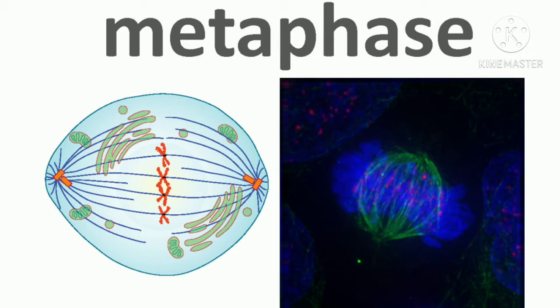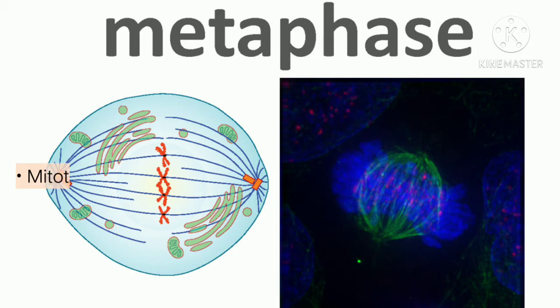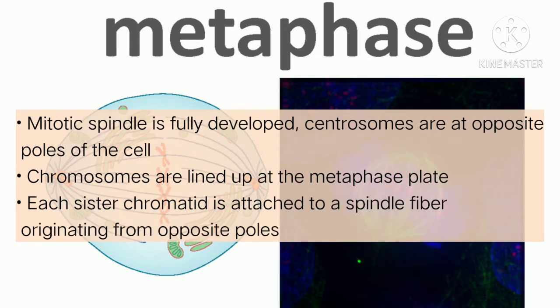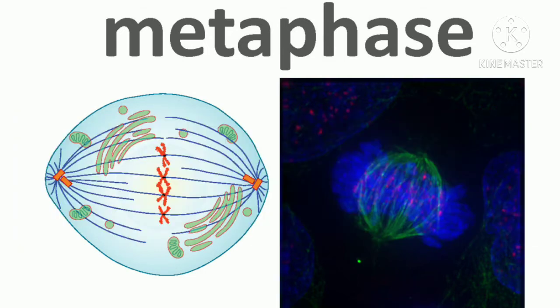During metaphase, all the chromosomes are aligned in a plane called the metaphase plate, or the equatorial plane, midway between the two poles of the cell. The sister chromatids are still tightly attached to each other by cohesin proteins. At this time, the chromosomes are maximally condensed.